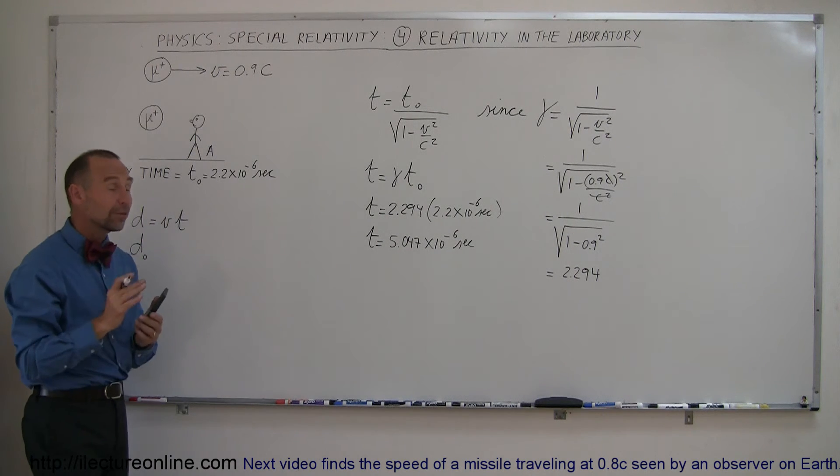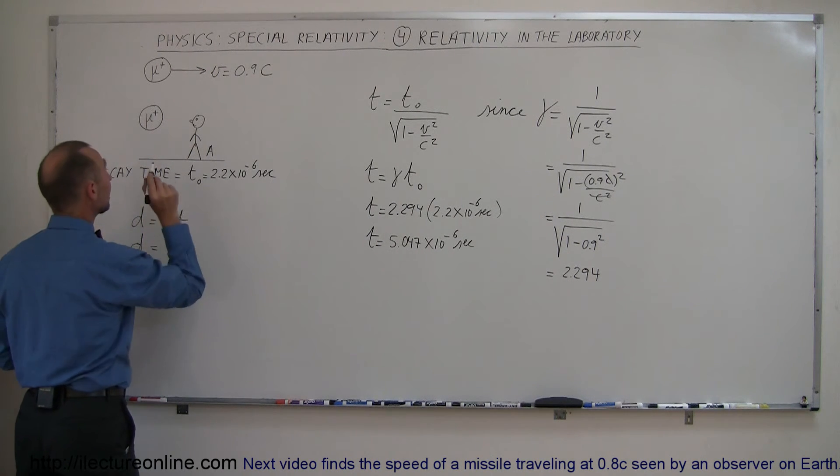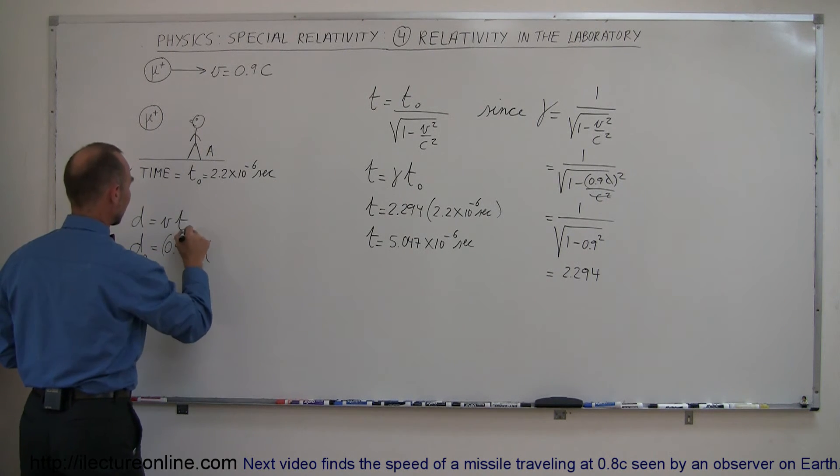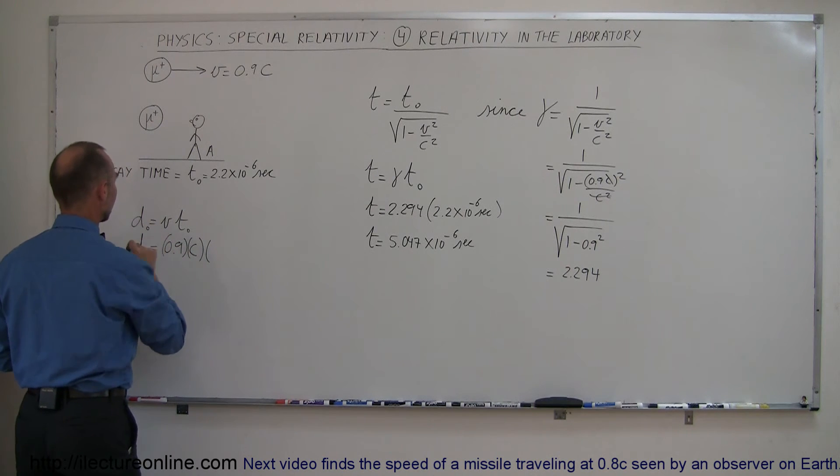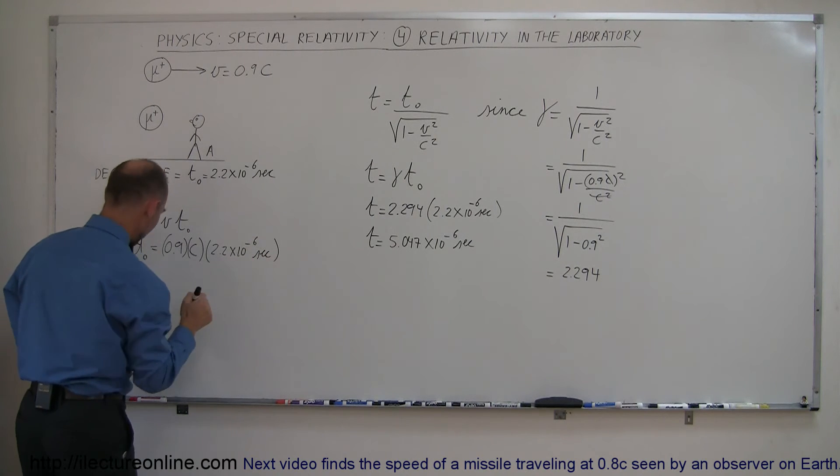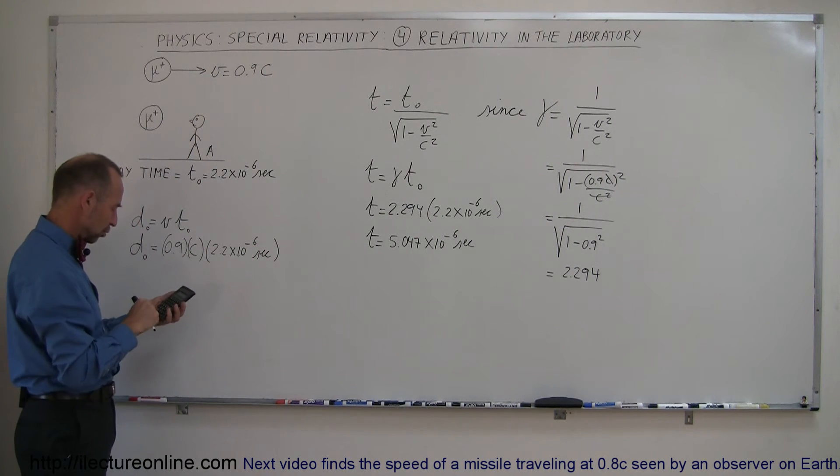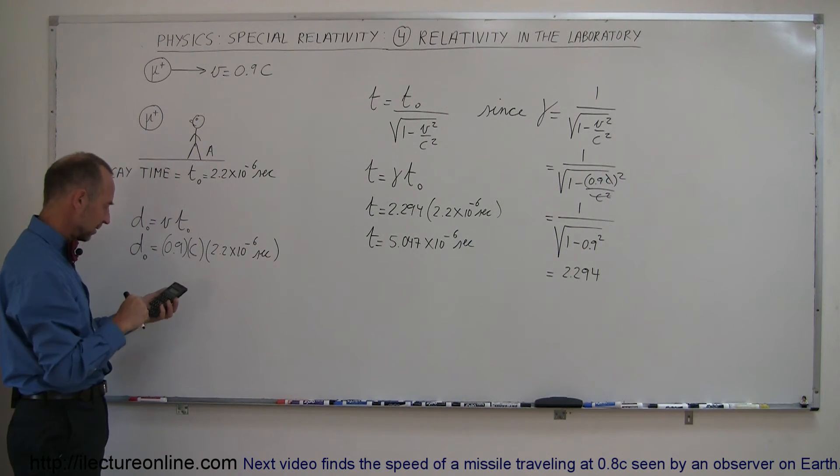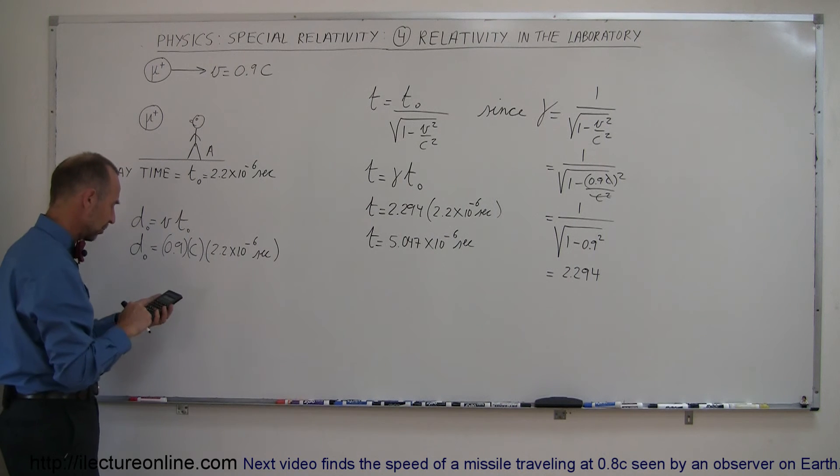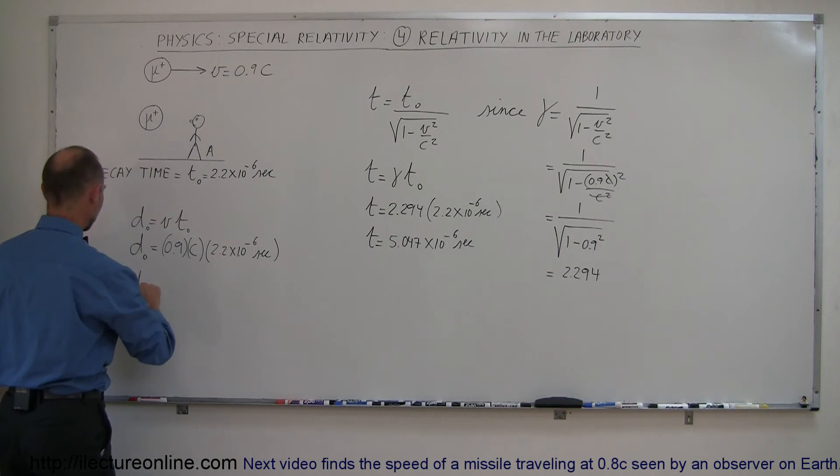So the distance would be the velocity, which is 0.9 times the speed of light, times the rest time, and I should put rest time here, like so. And so this is 2.2 times 10 to the minus 6 seconds, and if we calculate that, let's see, 2.2 times 10 to the minus 6 times 0.9 times 3 times 10 to the 8, because of course the speed of light is 300 million meters per second, and so we get distance is equal to 594 meters.